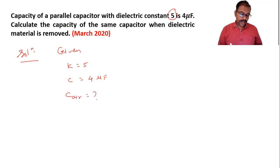So here the capacity is given by K times the capacity with air. So when we use dielectric material by replacing air, then capacity increases by K times. So we can write capacity with air as the capacity divided by the dielectric constant.